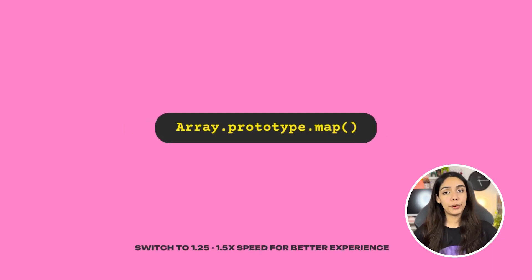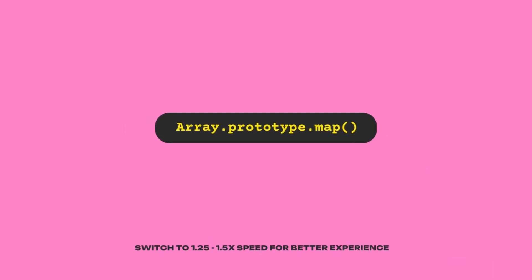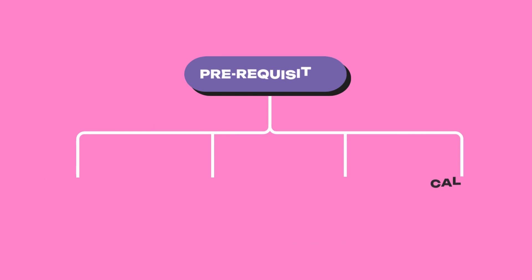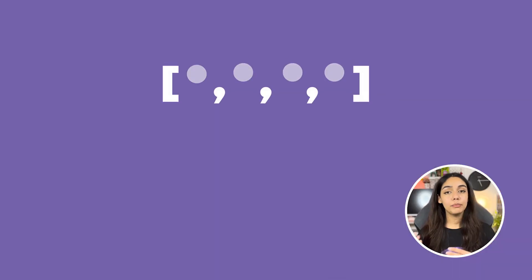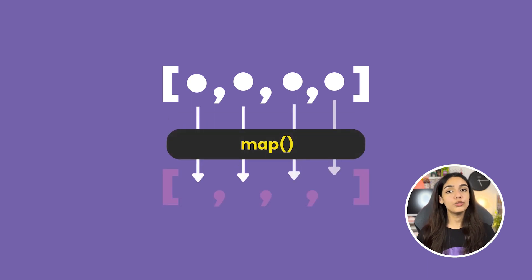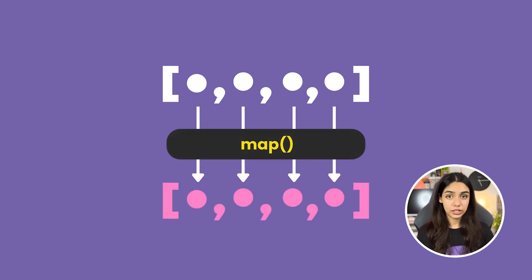In this video I'm going to talk about the map array method in JavaScript. To understand it properly you need a good understanding of callback functions, arrow functions, and pass by value and call by sharing. The map method maps every value in the original array to a new value in the returned array.